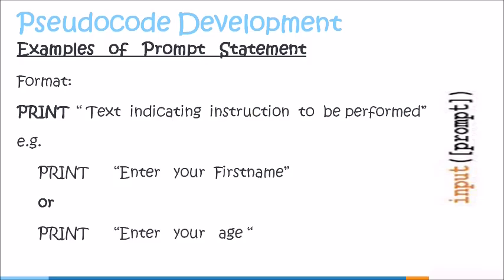Here we have two examples of prompt statements. In our first example, we're seeing the keyword print followed by the instruction "enter your first name." The second example also has the keyword print as well as the instruction "enter your age." These instructions are clear, and once presented to the user, they will know exactly what they are being required to do.